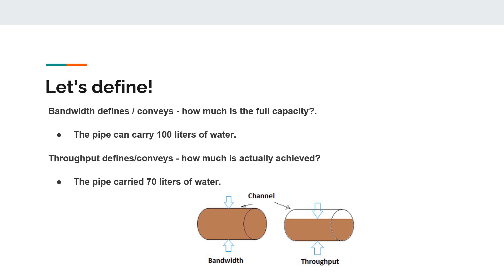What is the maximum capacity versus what actually is achieved? That's called the bandwidth versus throughput.